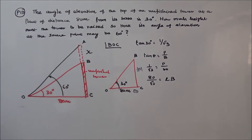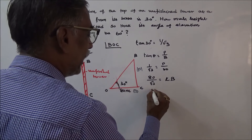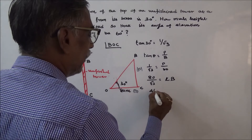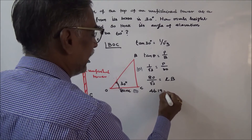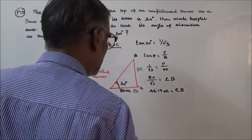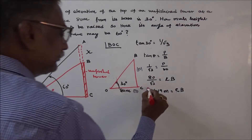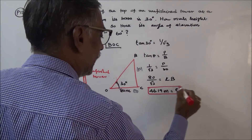So CB equals 80 by root 3. We calculate 80 by root 3, which is equal to 46.19 meters. So CB is 46.19 meters.